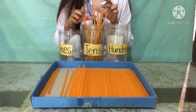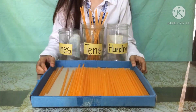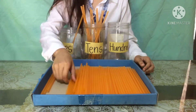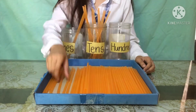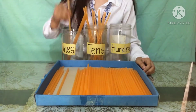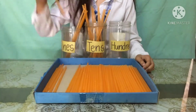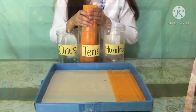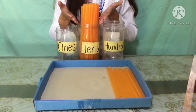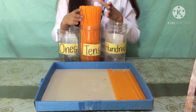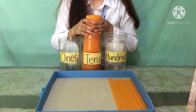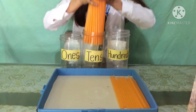Then, we will count again the straws one by one. 1, 2, 3, 4, 5, 6, 7, 8, 9, 10. Since we have 10 sets of 10 straws, I will put them in one bundle and move to the hundreds place.